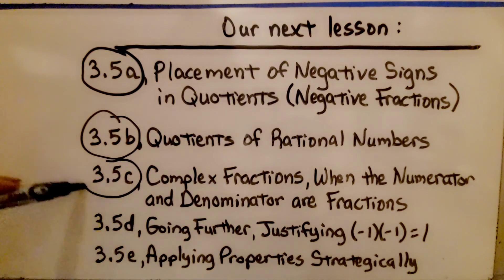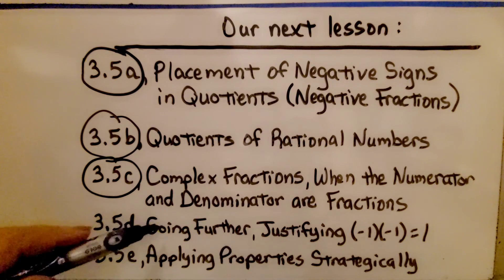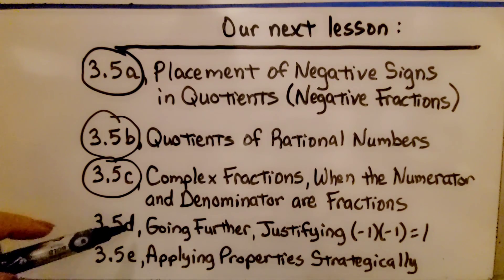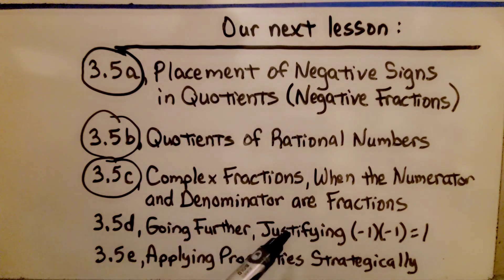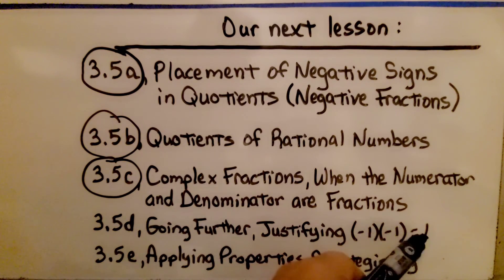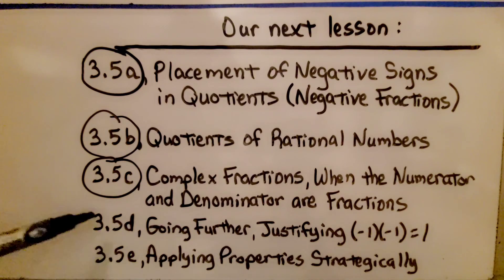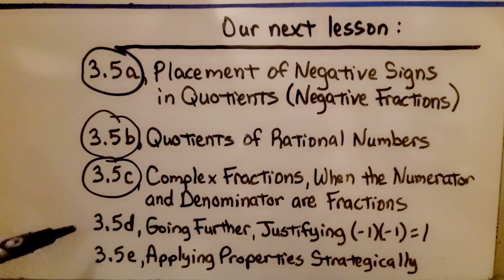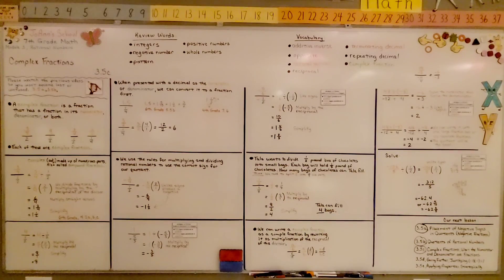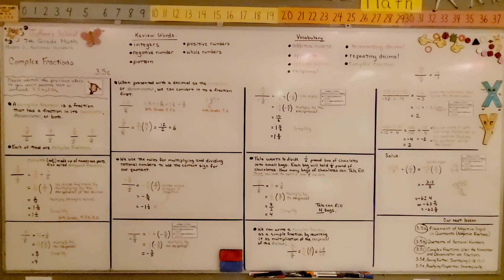We're finished with part C. We're actually going to do the going further, which is 3.5D, and we're going to talk about justifying that negative 1 times negative 1 equals positive 1 — so check the back of the lesson for 3.5. Just remember, that fraction bar is like a division symbol — it's telling us to divide the numerator by the denominator. And did you know that fraction bar is also called a vinculum? Join me for the next lesson and have a really wonderful day!